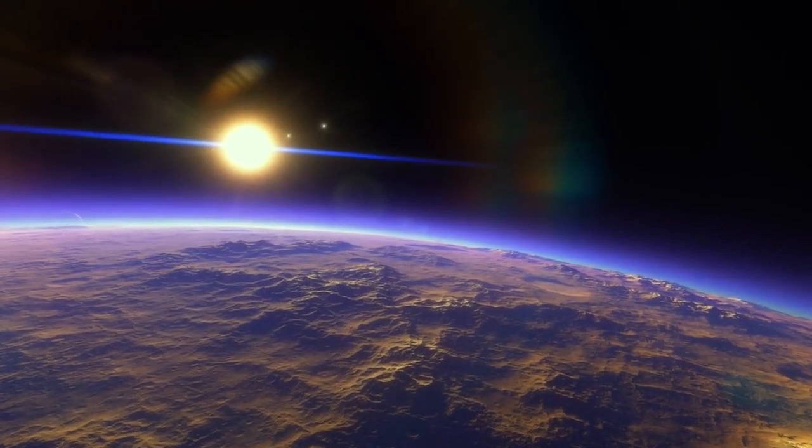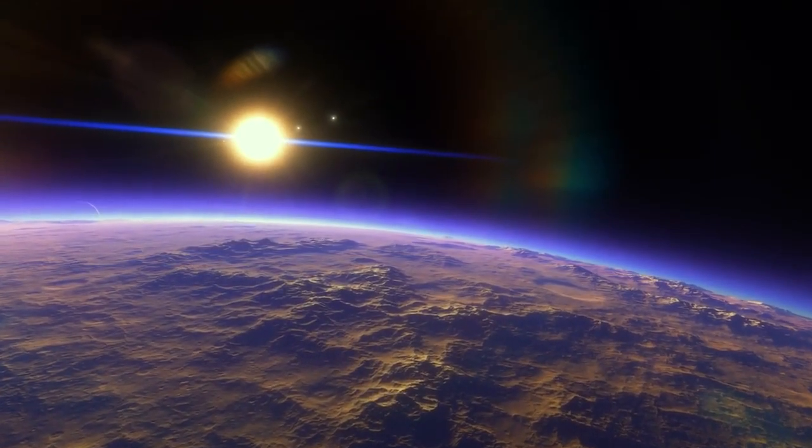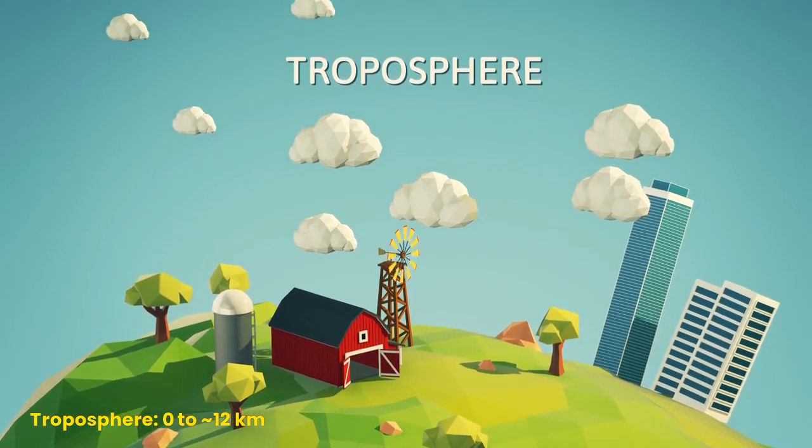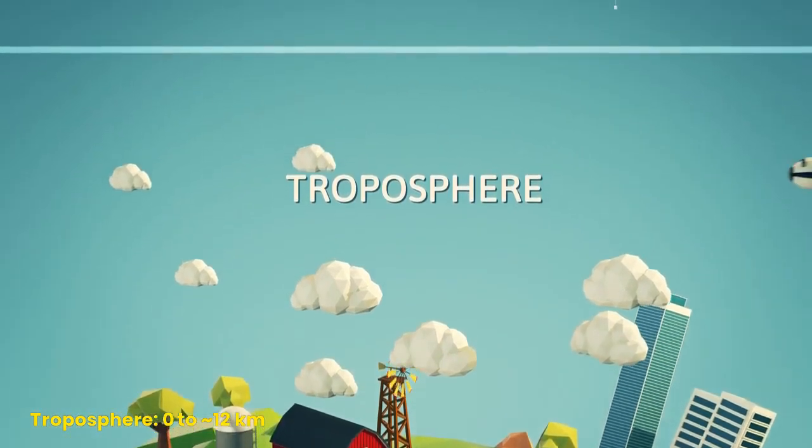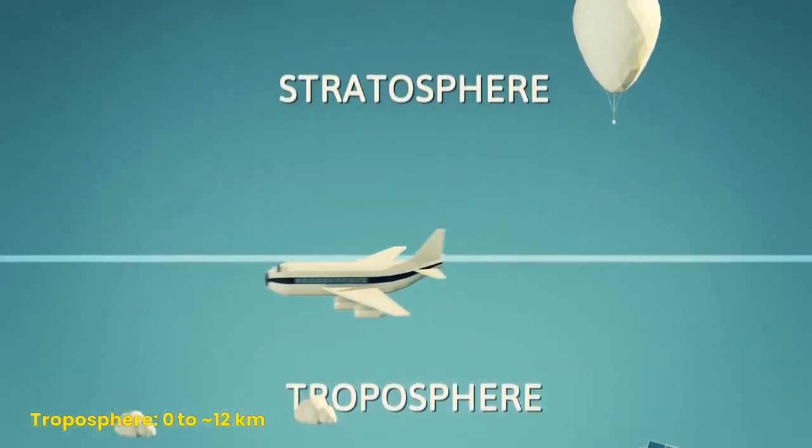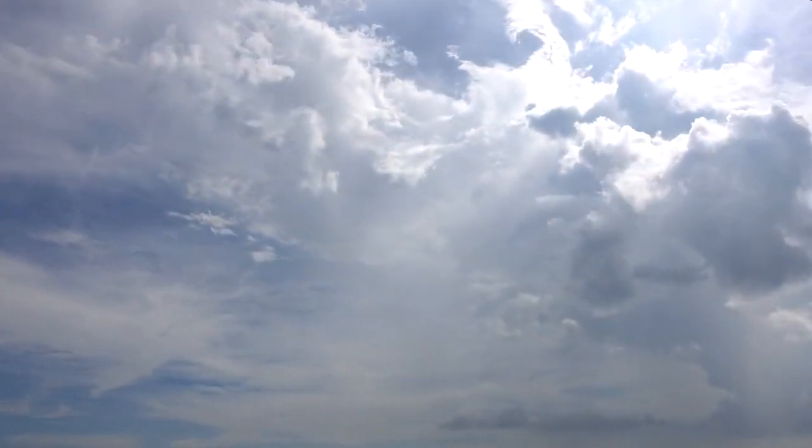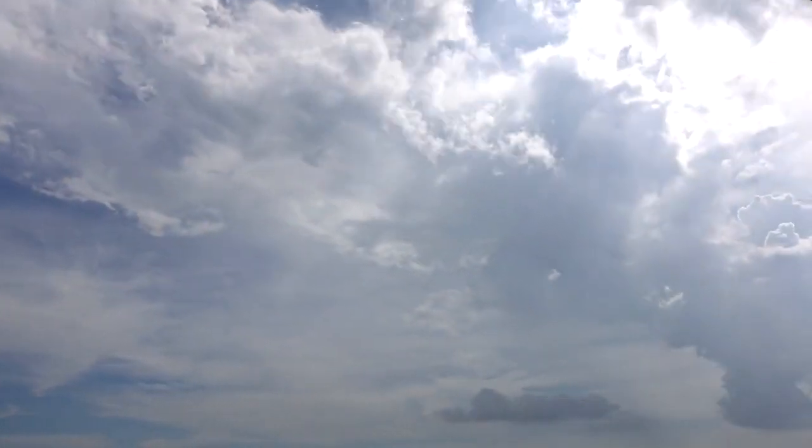These are only approximate altitude values. Troposphere: this is the lowest layer of the atmosphere, and it's where all the weather happens. It extends from the Earth's surface up to an altitude of about 12 kilometers.